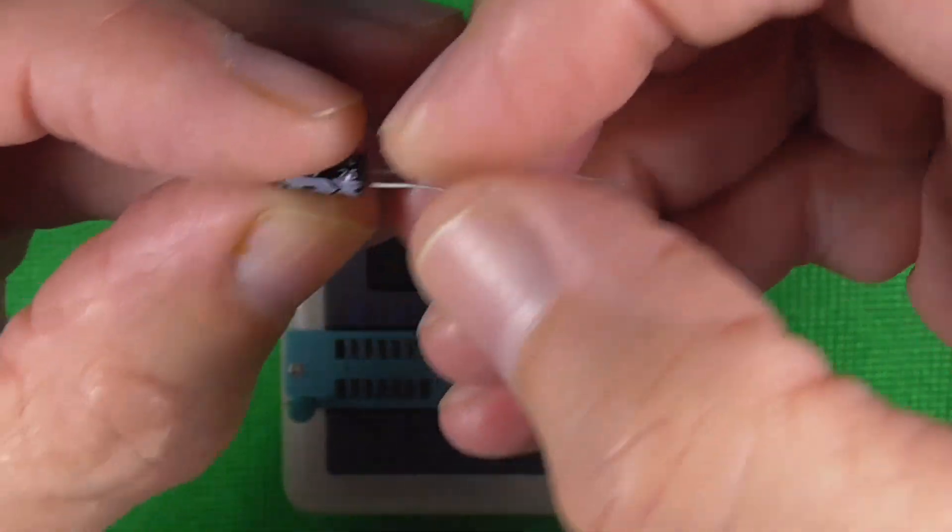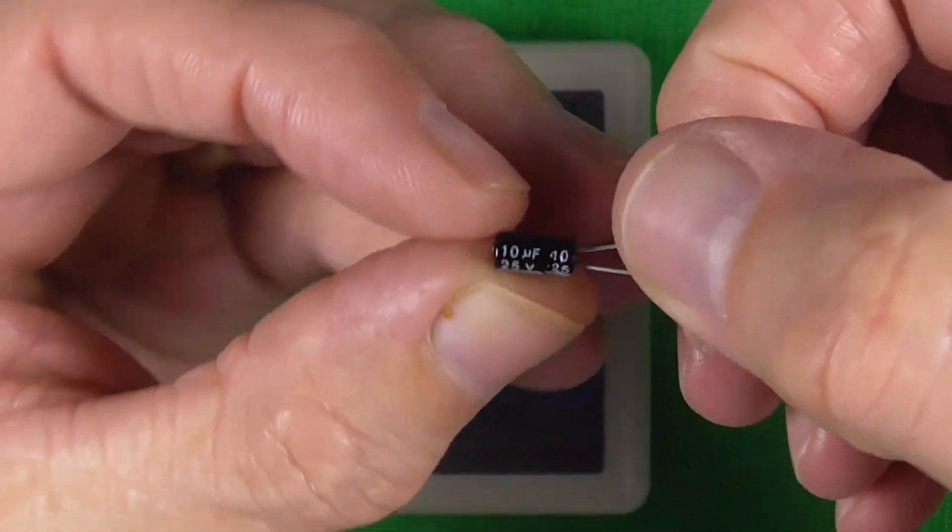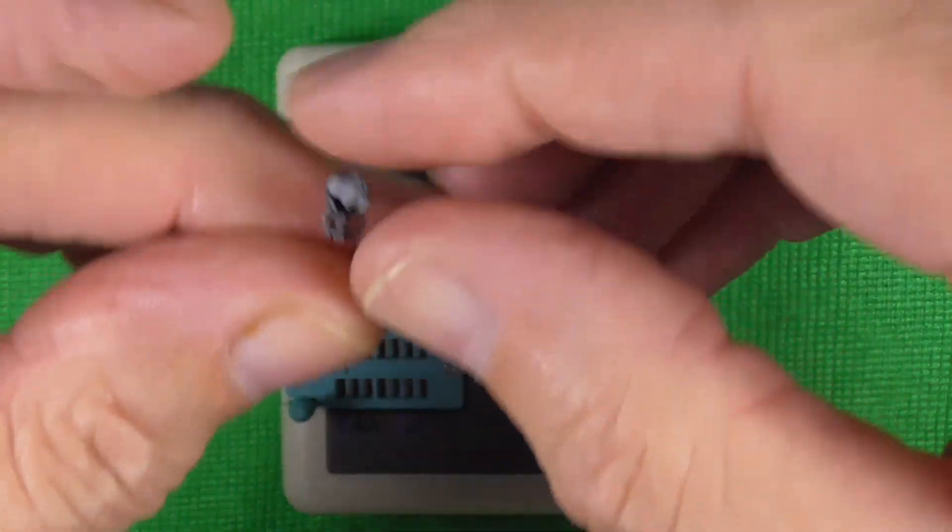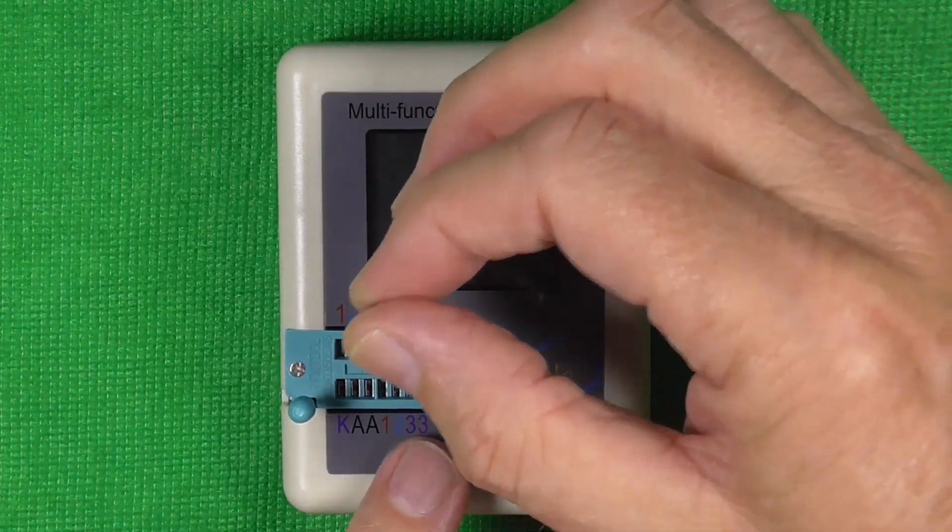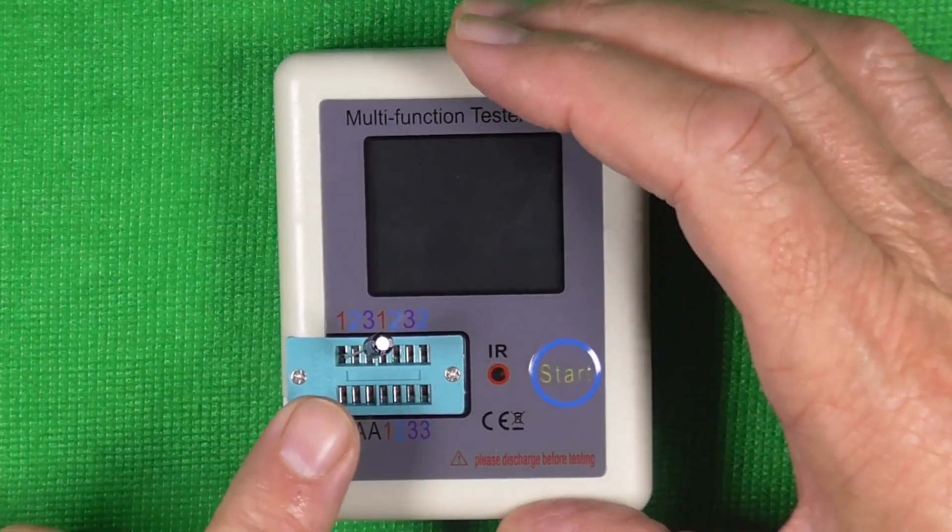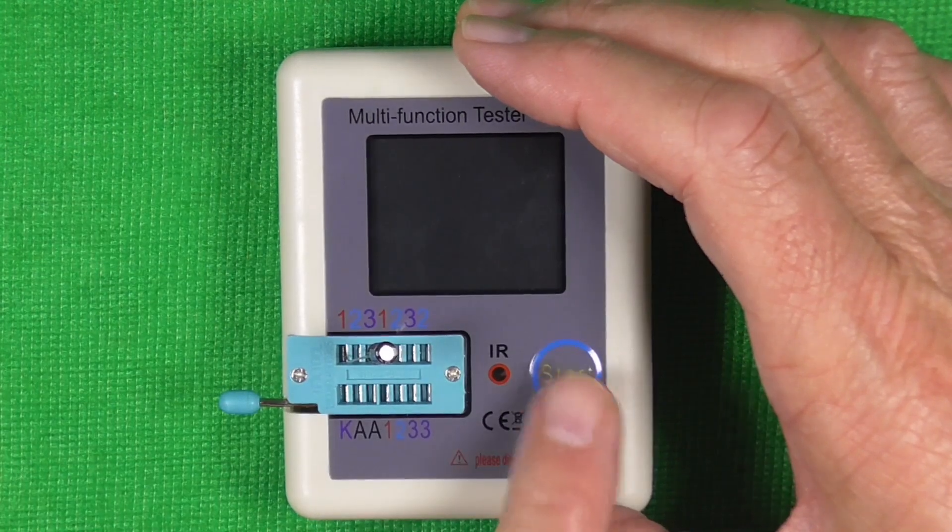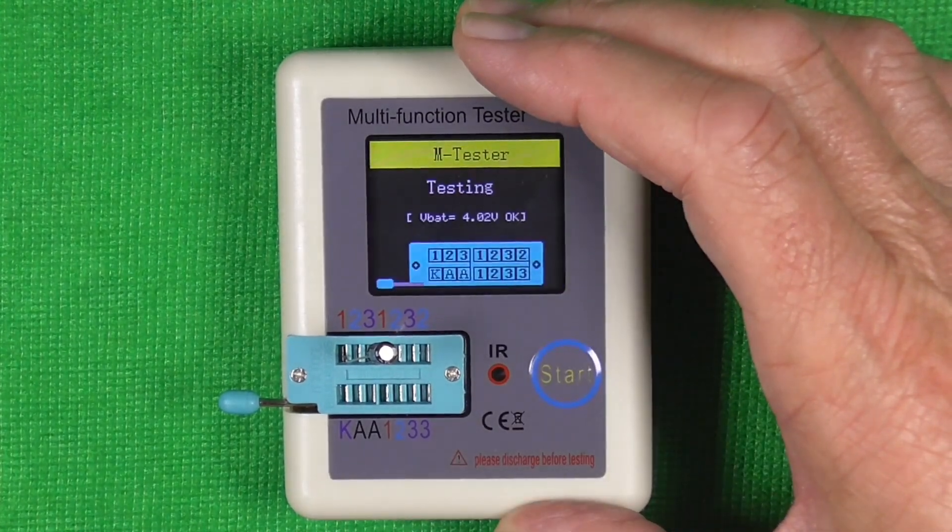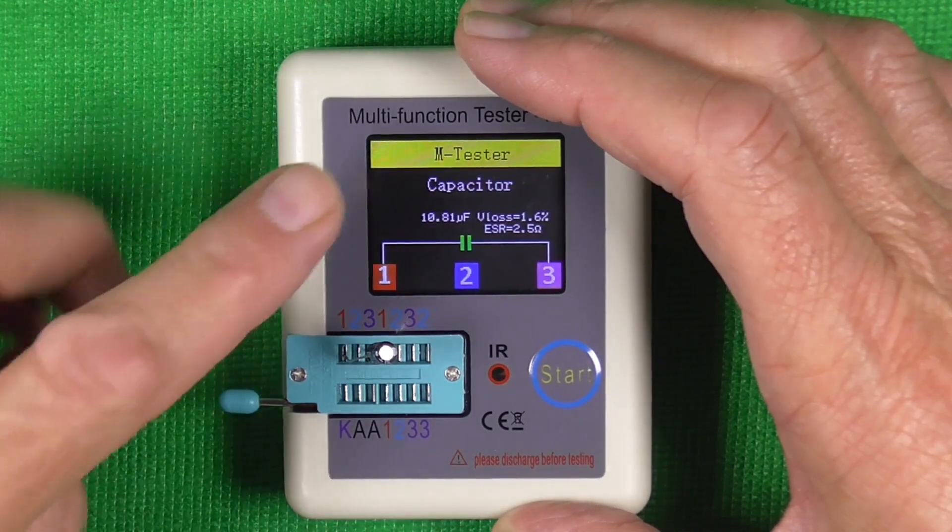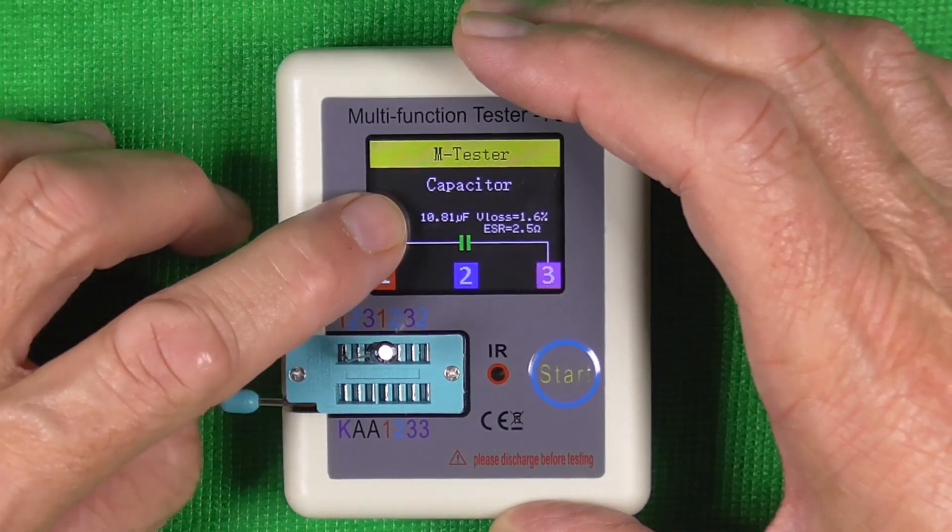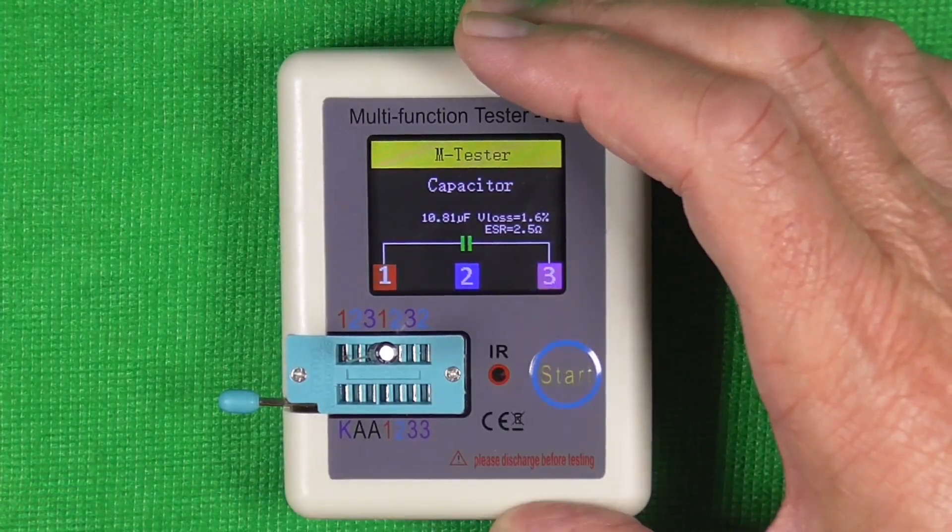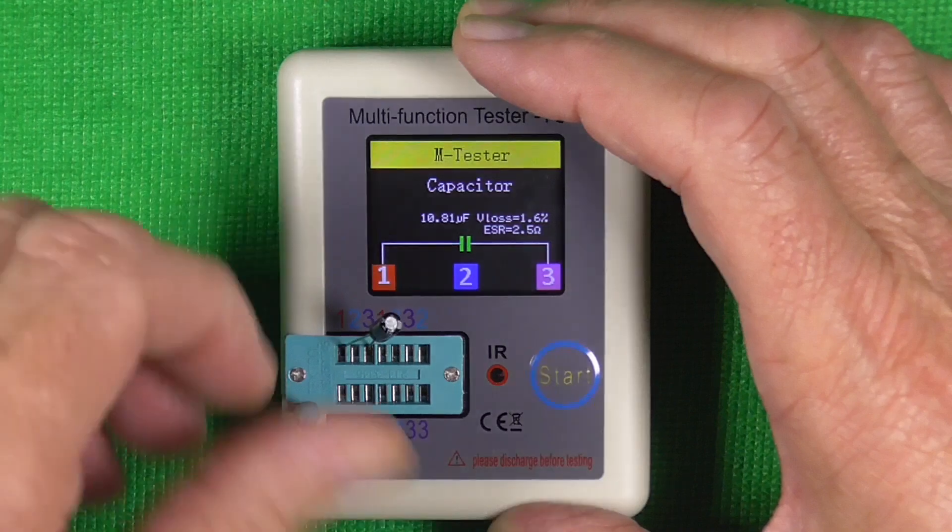Right, so the first thing I'm going to test is the capacitor that came with it. It's a 10 microfarad, 25 volt. So all we need to do is pop it into two of the test points, move the lever over so it clamps it, press start. And it's identified as a capacitor, 10.81 microfarad with an ESR of 2.5 ohms.